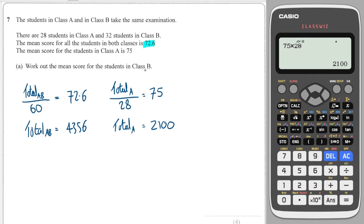Okay, work out the mean score for the students in Class B. Well, I can work out the total in Class B because that is the difference between these two. So that's 4356 minus 2100.